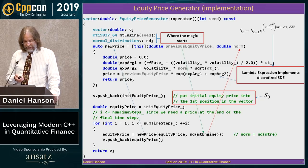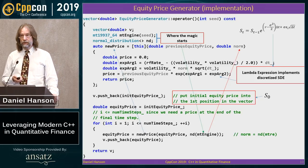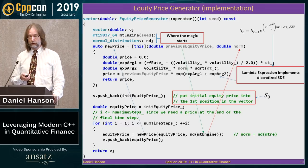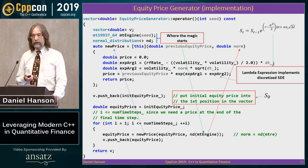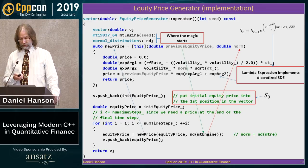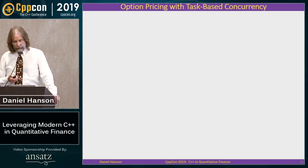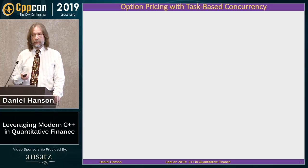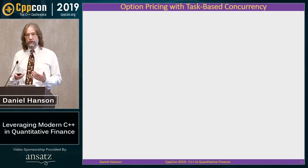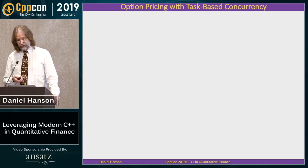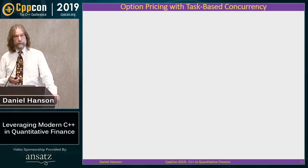We now have a class that will generate one random equity scenario. But remember, we need about 10,000 of these. Since they don't care about each other, it's very easy to use task-based concurrency — another feature in C++11.